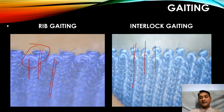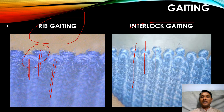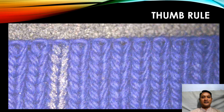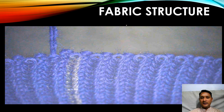Before starting your analysis, you have to cross-check whether the particular fabric quality is knitted using rib gating or interlock gating. These two things need to be verified before starting analysis of any rib or interlock fabric. Now let's start our analysis. As usual, we need to follow our thumb rule: remove all loosened threads and draw a line so that your analysis will be accurate. Now I'm going to unravel course number one.